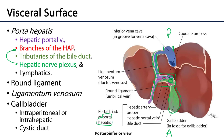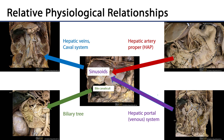To remind us, the right lobe, left lobe, caudate lobe, and quadrate lobe are all visible on the visceral surface. It's useful to think about the relative physiological relationships of these anatomical structures when we consider the liver, and there are four things I want to bring together.